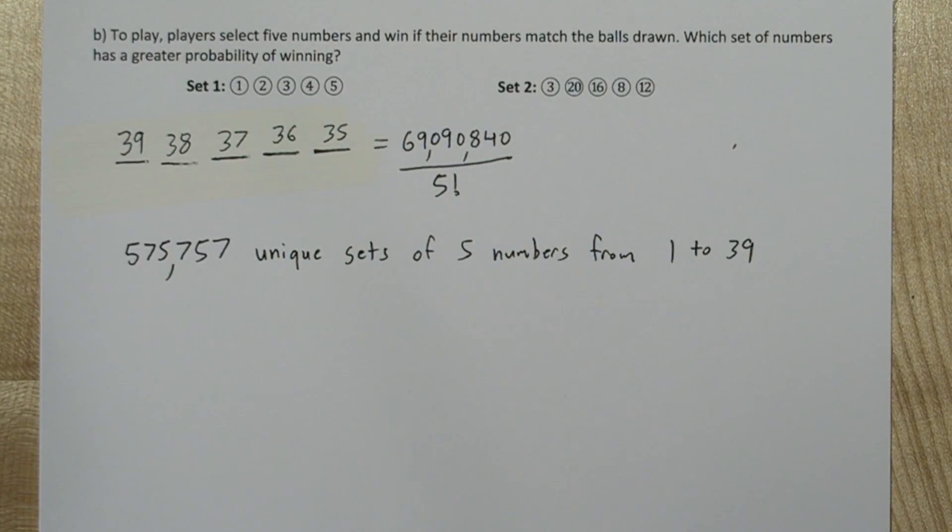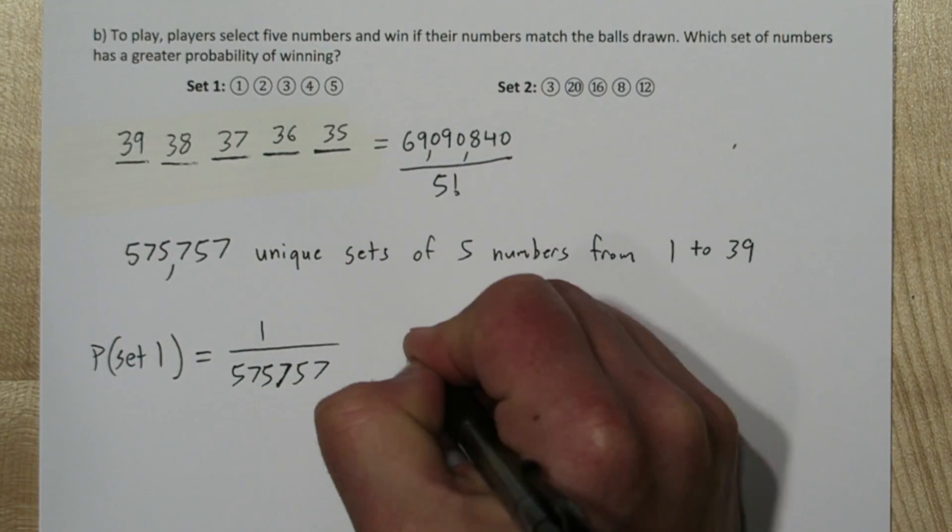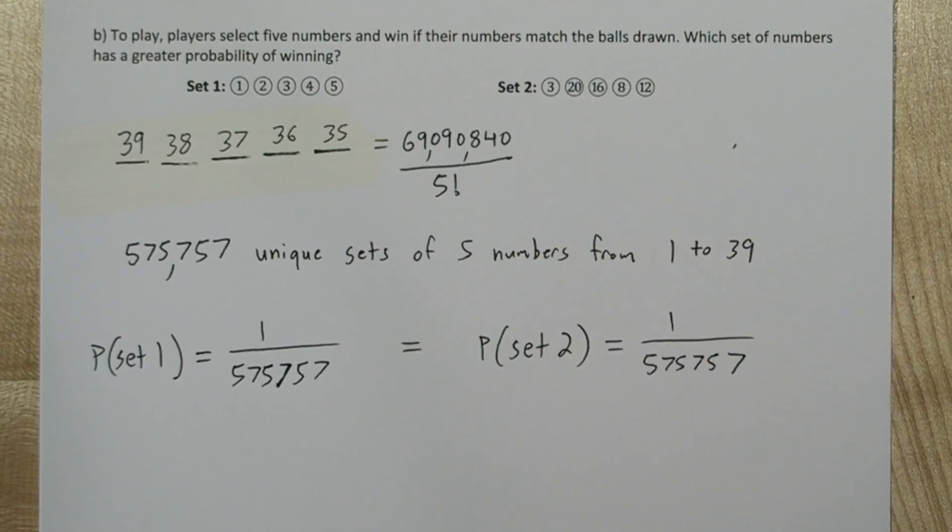Now, set 1 and set 2 each represent 1 of these 575,757 unique sets of numbers. So the probability of drawing either of these sets is the same. Very unlikely.